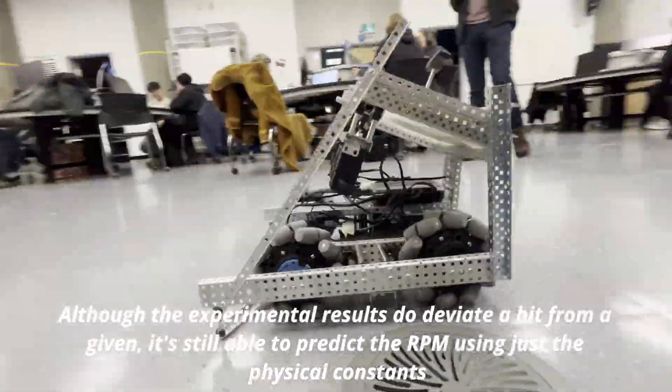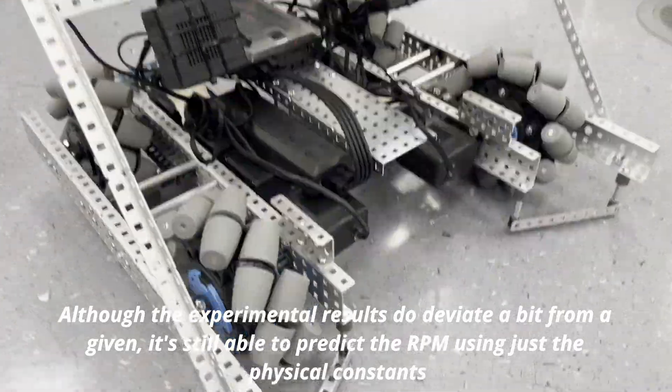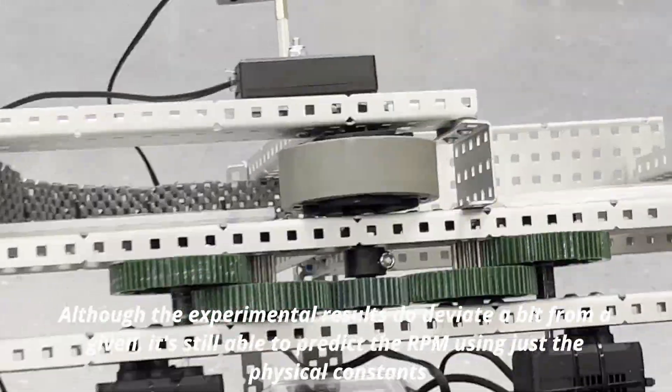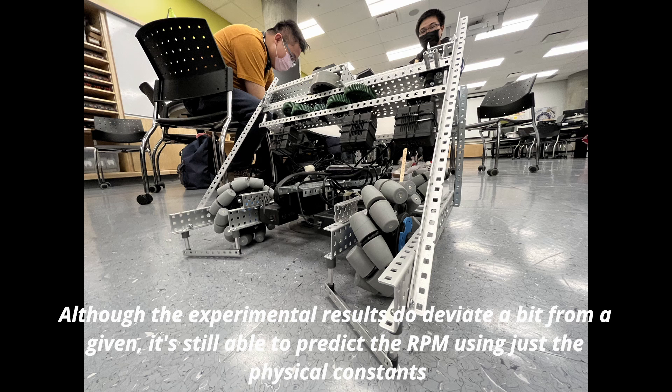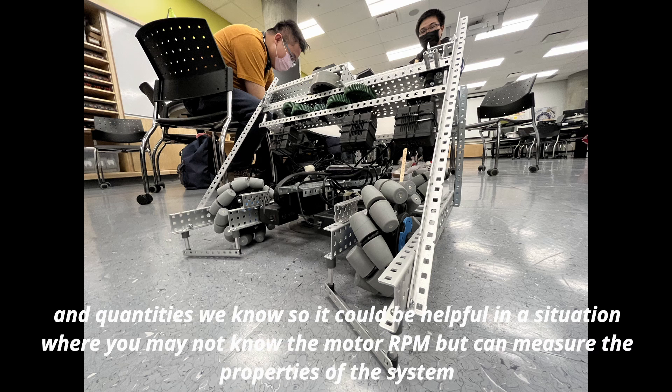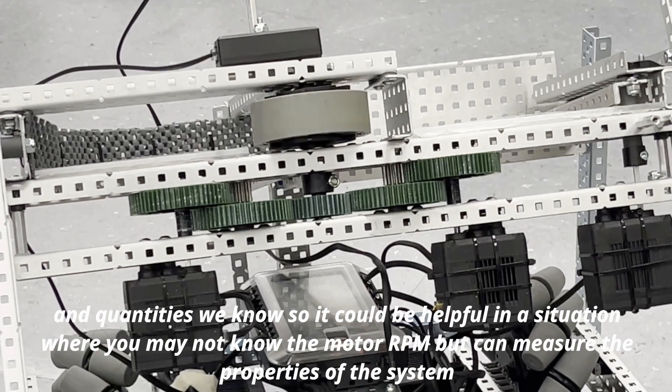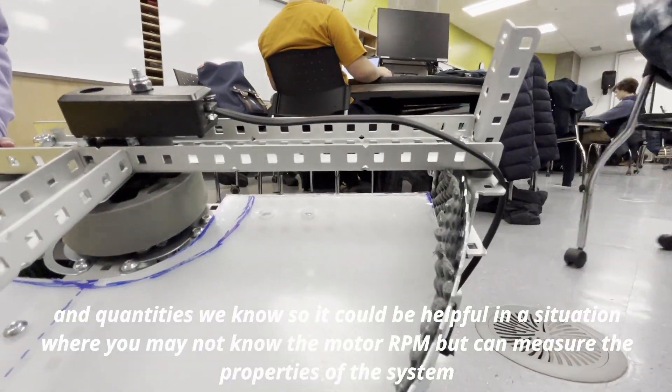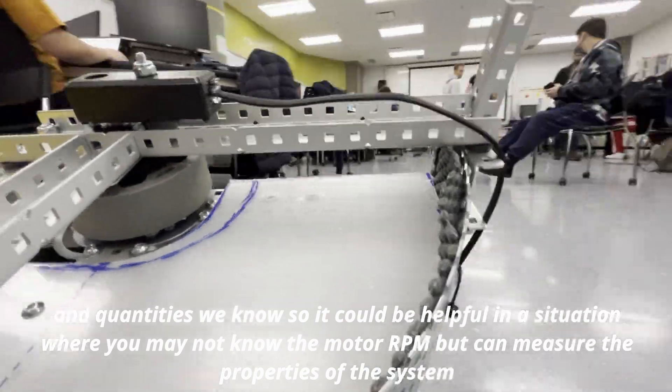Although the experimental results do deviate a bit from the given, it's still able to predict the RPM using just the physical constants and quantities we know so it could be helpful in a situation where you may not know the motor RPM but can measure the properties of the system.